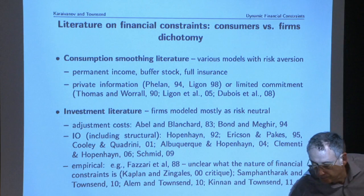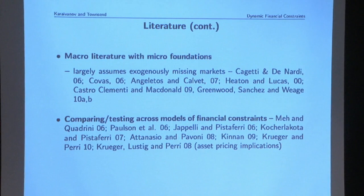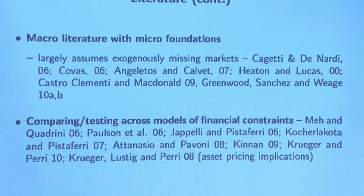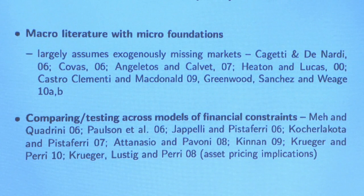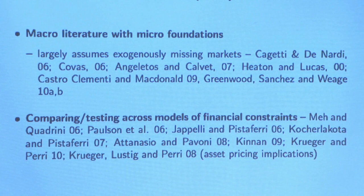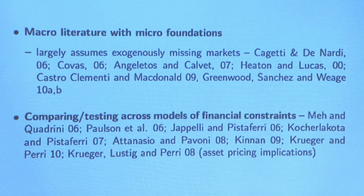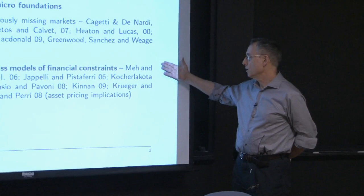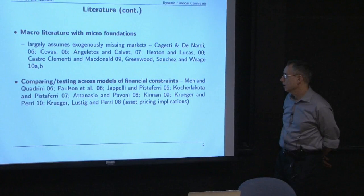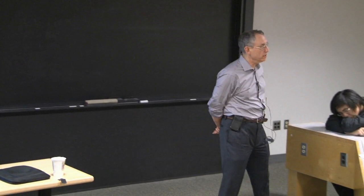I've already mentioned some of the macro literature within complete markets—some papers covered in class, not all. Finally, we get to this small but growing literature trying to test across different models. Most of the above pick one thing to do and try to do it really well; some compare across two models, some more than two. There just isn't that much out there that is systematically agnostic about the underlying constraint and sets out to discover the best fit against the data—hence what the obstacles really are.